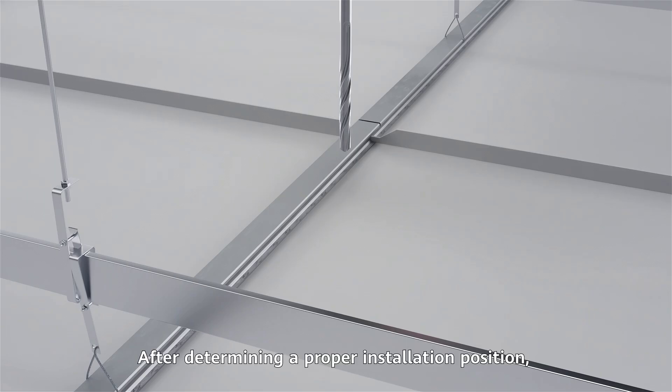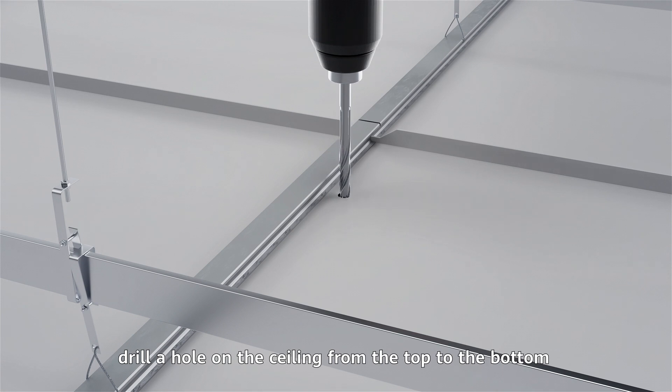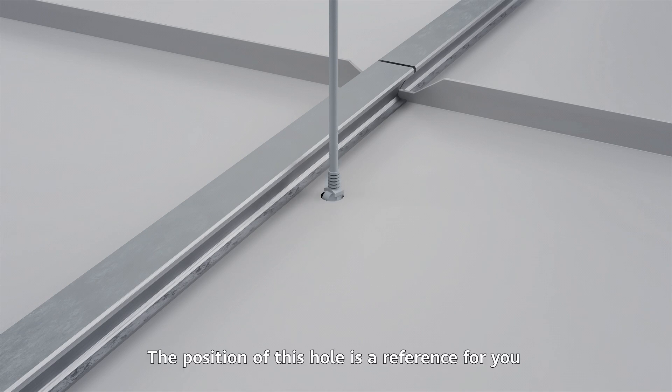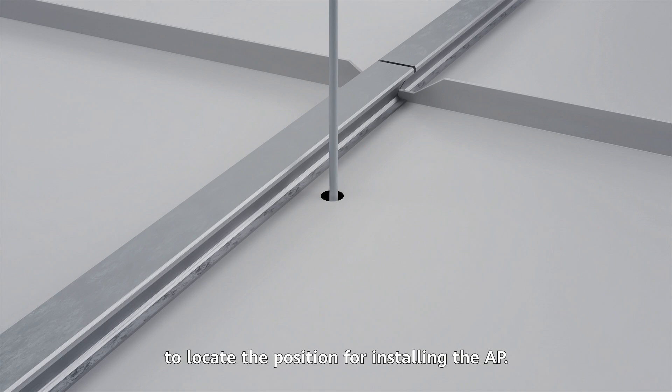After determining a proper installation position, drill a hole on the ceiling from the top to the bottom for the ethernet cable to pass through. The position of this hole is a reference for you to locate the position for installing the AP.